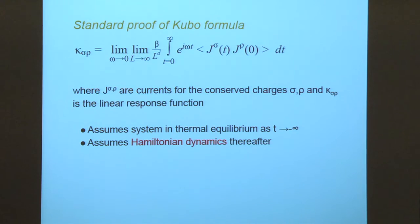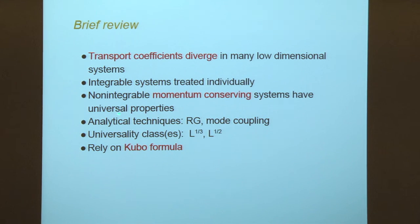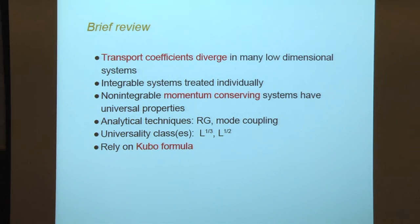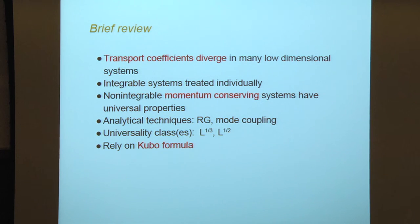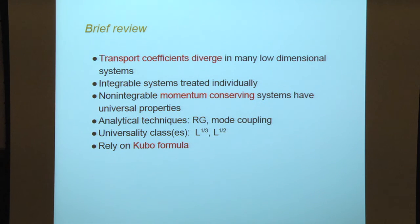Transport coefficients diverge in many of these low-dimensional systems. Integrable systems have to be treated individually. But if you look at non-integrable momentum-conserving systems, then they have many universal properties. Using various analytical techniques such as the renormalization group and mode coupling, one finds universality classes with different scaling of the conductivity as a function of system size. The crucial thing I want to point out here is that the analytical work relies on the Kubo formula for its validity.